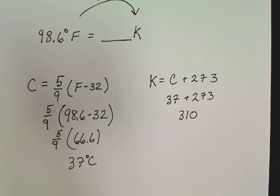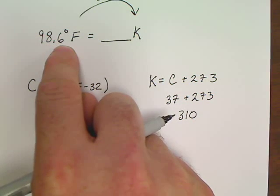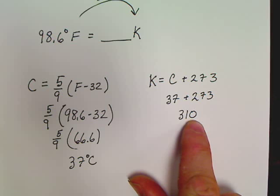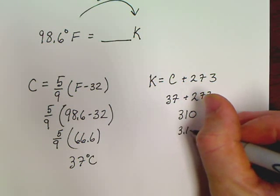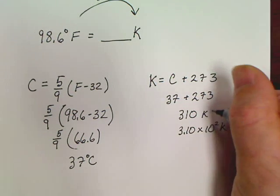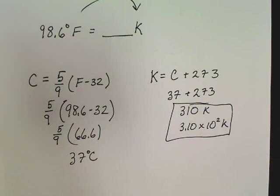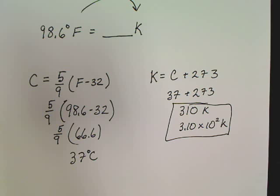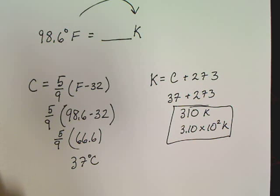Now I always like to bring up sig figs when we're doing this a little bit, and most people get kind of off here. 98.6 has three sig figs. How do we make this three sig figs? 3.10 × 10². That would give us three sig figs in that answer if that's something that we were after.